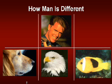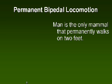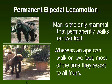What I want to show you is there are some huge differences. Let's talk about some of the differences — how man is different from animals, and especially different from, quote, the closest cousin. First: permanent bipedal locomotion. Man is the only mammal who walks permanently on two feet. It's true an ape or chimpanzee can for a little while, but they get scared and they run — they resort to all four.